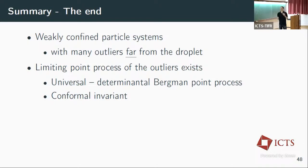In summary: I talked about two types of weakly confined particle systems with many outliers far from the droplet. It turns out there is a limiting point process — at least for simply connected components — which is the determinantal Bergman point process. It does not depend on the initial properties of the measure, and it is conformally invariant, transforming well between different shapes.